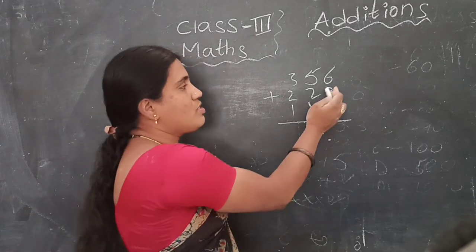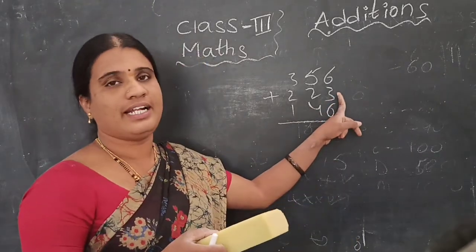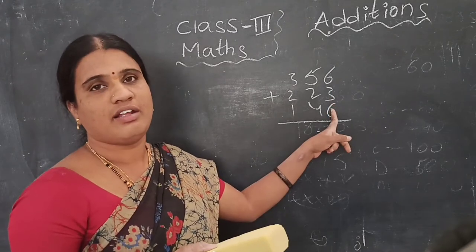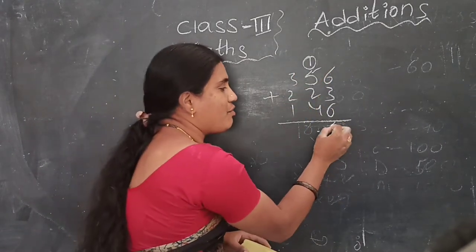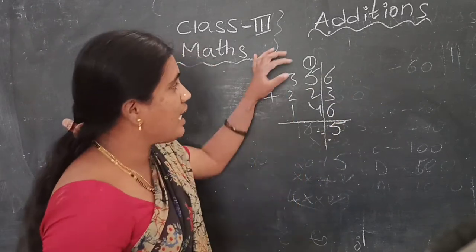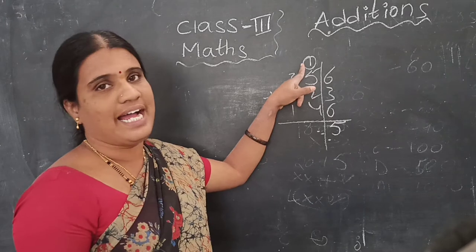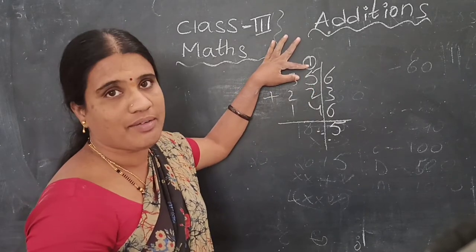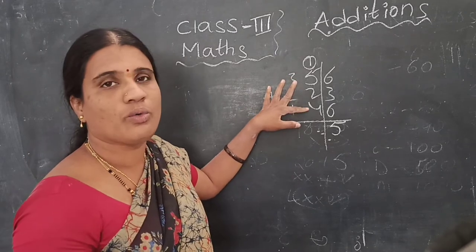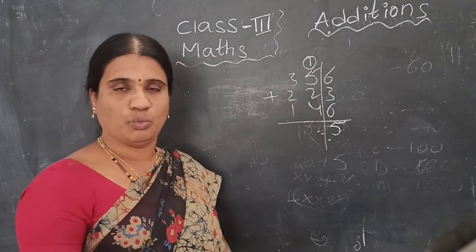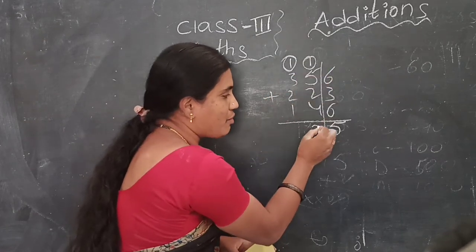Here we have to judge. So 6 plus 3 is 9. 9 plus 6 is 15. 15 means 1 carry and 5 here. So 1 means you are writing here as a carry. And 5 you have to write in this place. Next, this carry also you have to do the addition. So 5, 1 — 1 plus 5 is 6. 6 plus 2 is 8. 8 plus 4 is 12. So 12: 2 goes here and 1 is the carry.